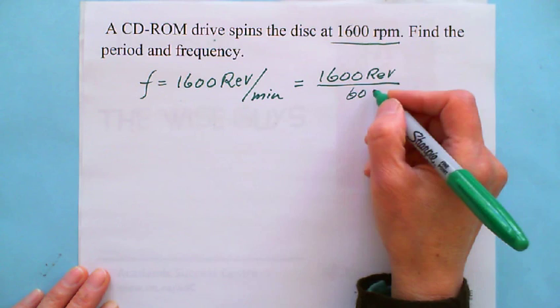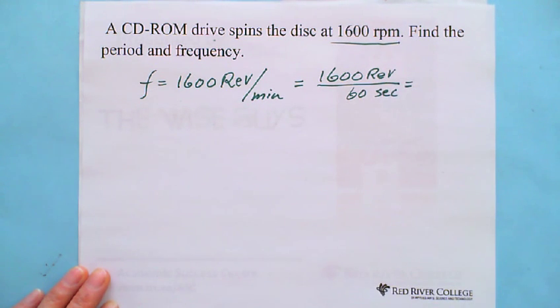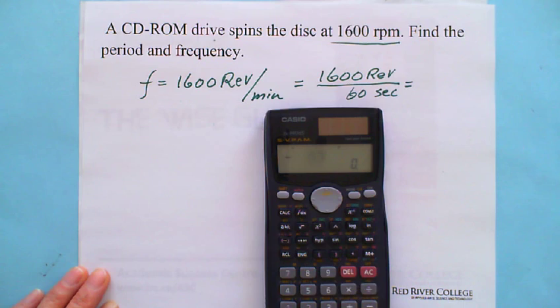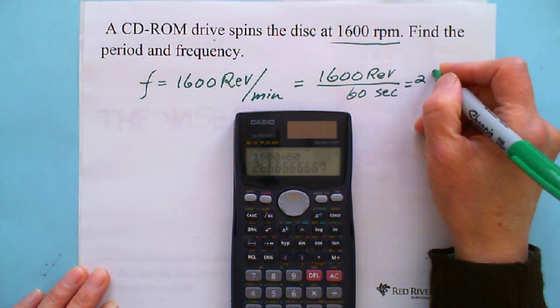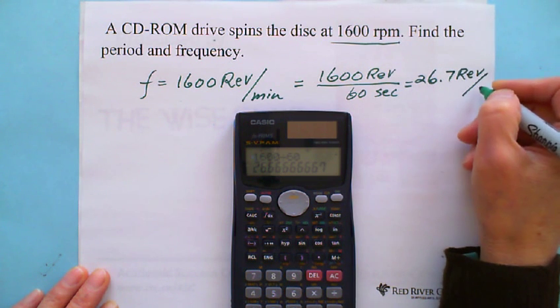We got the answer: 1600 divided by 60, you got 26.7 revolution per second. So also you can write F equals 26.7 Hertz.